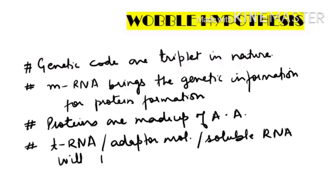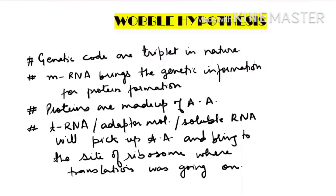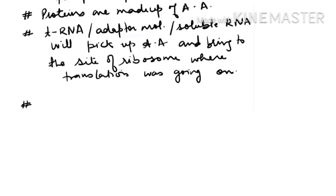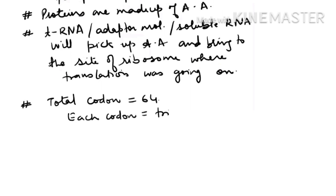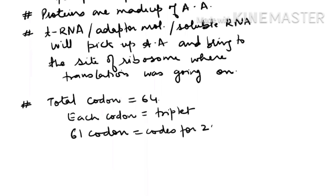Transfer RNA picks up the amino acids and brings them to the site of the ribosomes where translation is going on. Now, we have already studied that the total number of codons is 64. Each codon is triplet, meaning it is made up of three nitrogenous bases. Out of the 64 codons, 61 codons code for amino acids — which are only 20 in number — and three codons are stop codons.